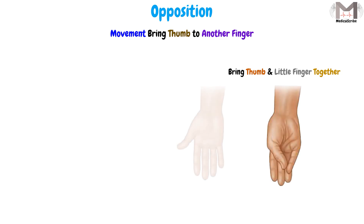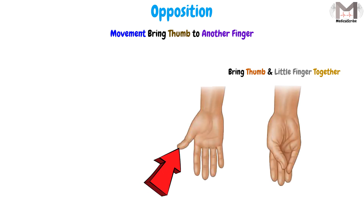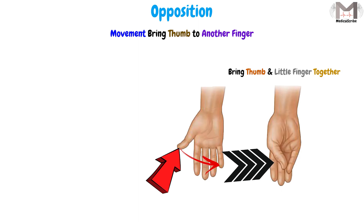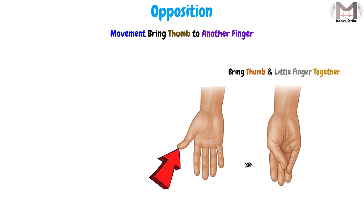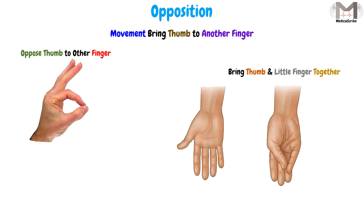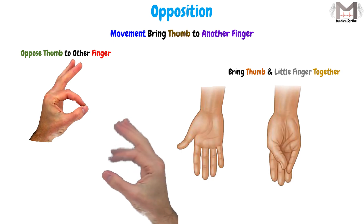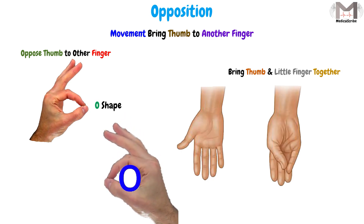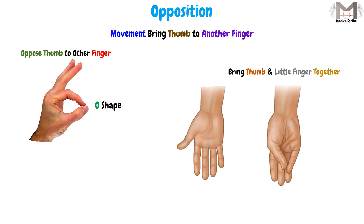We will bring the tip of the thumb and make it come to meet and oppose it to the tip of the little finger. And we have a magic way to memorize this movement: imagine when we oppose the thumb to another finger, we will create an O shape in the area between them. This created O shape stands for the first letter O in opposition.